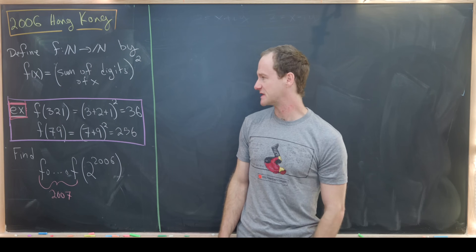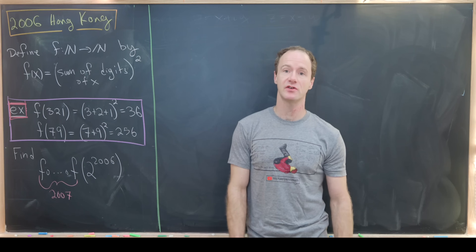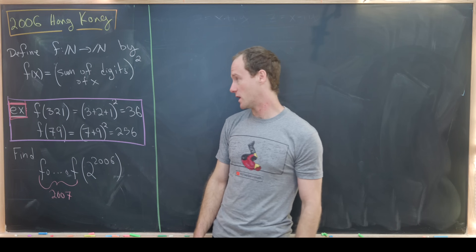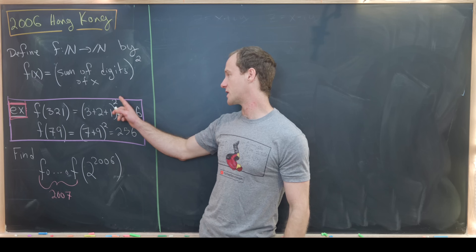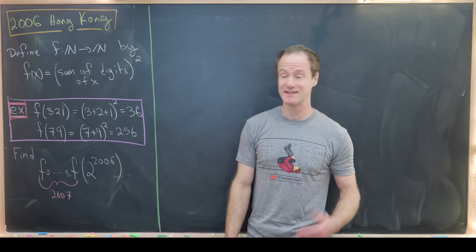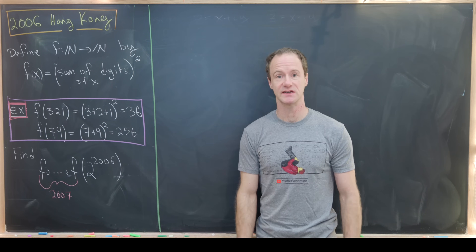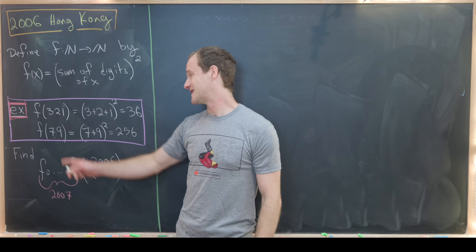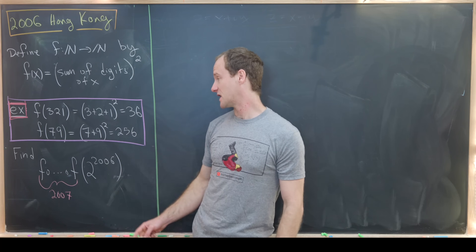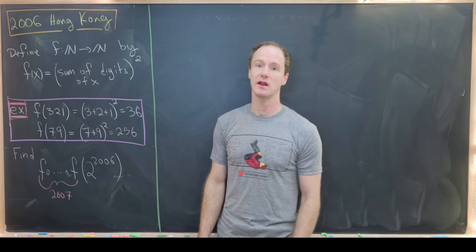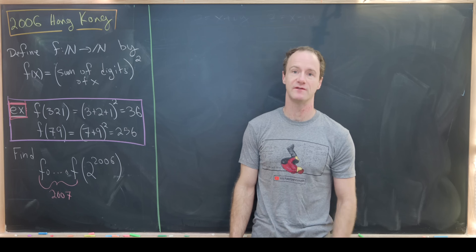Let's look at some examples. f of 321 is equal to (3 + 2 + 1) squared, or in other words 6 squared, which is 36. f of 79 is equal to (7 + 9) squared, in other words 16 squared, which is 256.